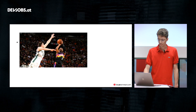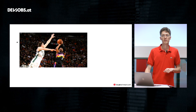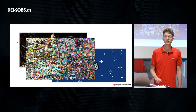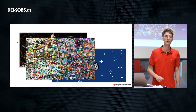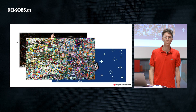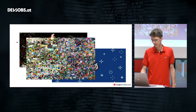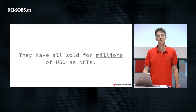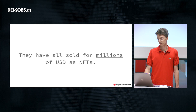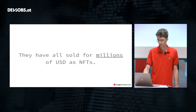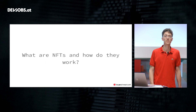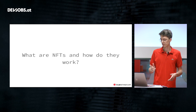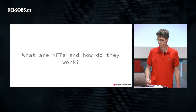So what do NBA video short clips, Nyan Cat, and this huge JPEG of JPEGs have in common? They have all sold for millions of US dollars as NFTs. So what are NFTs and how do they work? I will try to explain that over the next couple of minutes.